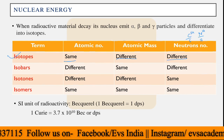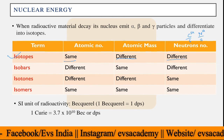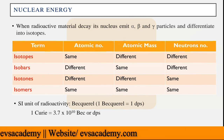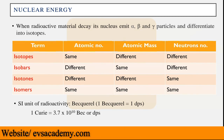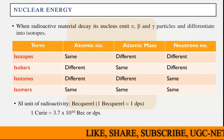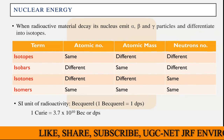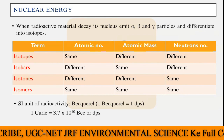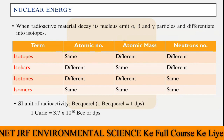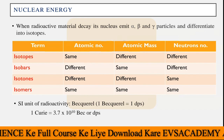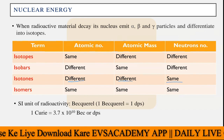Then we have isotones. In isotones, both atomic number and atomic mass are different, but the number of neutrons is the same for both. Isotones are materials which have the same neutron number but different atomic number and different atomic mass.